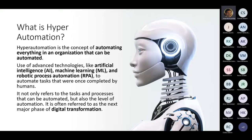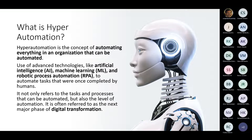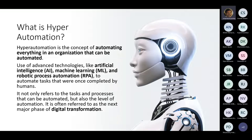As far as hyper automation is concerned, a simple meaning is: whatever can be automated within the given organizations — whether systems or processes — please go ahead and automate that. Minimize human efforts, minimize the tasks which were being done by human beings earlier.